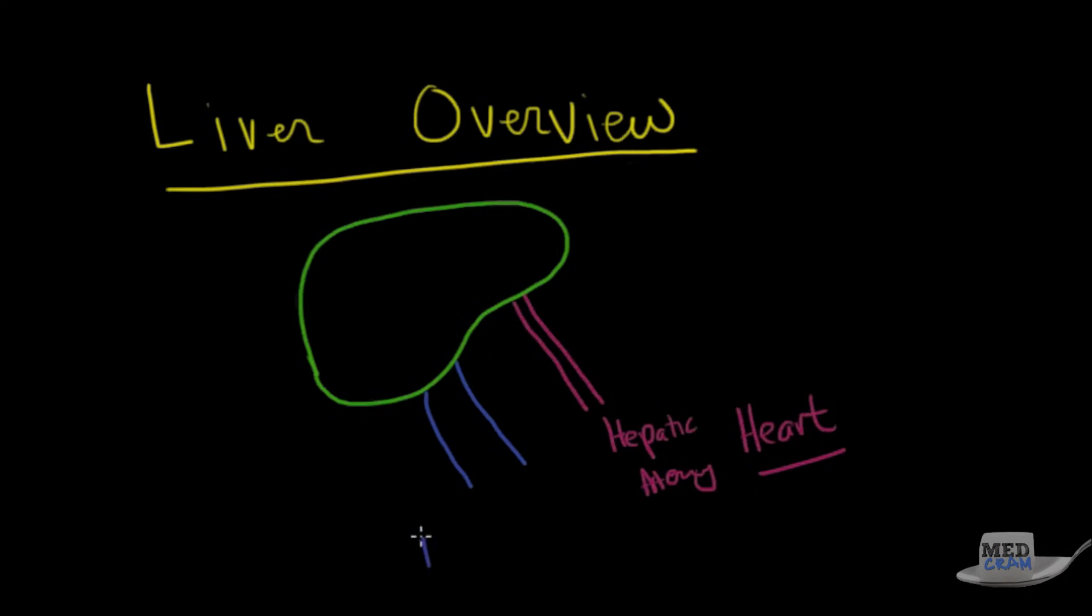The other input is the portal vein. And this is coming from the intestines. And this is important because a lot of medications that you ingest, like pills, the first place that they go is to the liver. And so the metabolism of these medications first occur in the liver. This is called first pass metabolism. And then they go on to the heart.